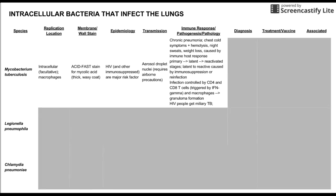Latent Mycobacterium tuberculosis can reactivate due to immunosuppression — for example, if a patient starts a new drug that suppresses the immune system — or if the patient gets reinfected with more bacteria. Normally the infection is controlled in the latent stage by CD4 and CD8 T cells, with interferon gamma being one of the major cytokines initiating containment. Macrophages also help by forming granulomas around the bacteria to keep it contained.